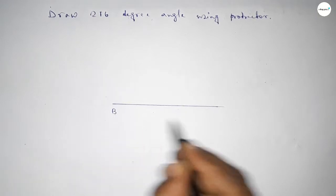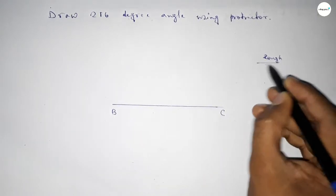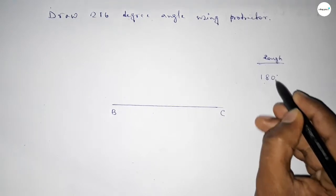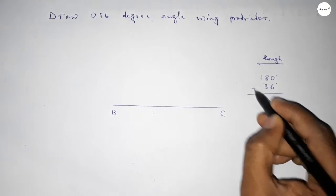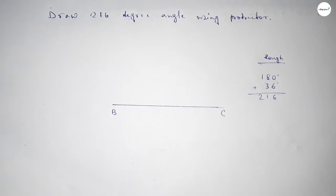Next, taking here point B and here point C. Now roughly discussing some calculation here. So if we add 36 degree angle with 180 degree, then we can get 216 degree. So this is 6, 11, 2. First we have to count 180 degree.